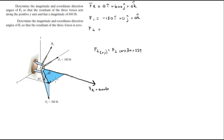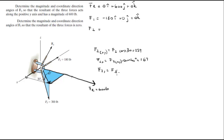Now that we have this projection we can find the x and y components. The x component of F2 is the projection times sine of 40 degrees, which equals 167. For the y component we do the same projection times cosine of 40 degrees, which equals 199.